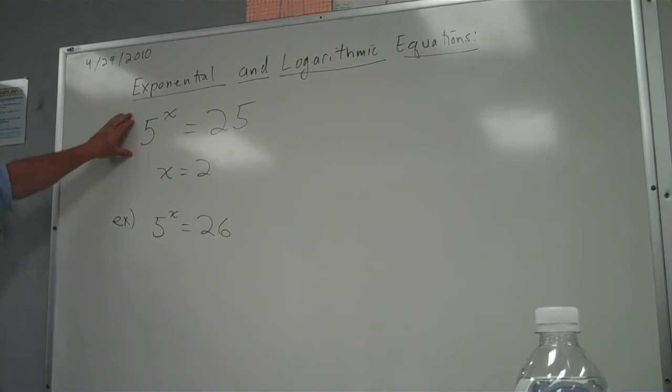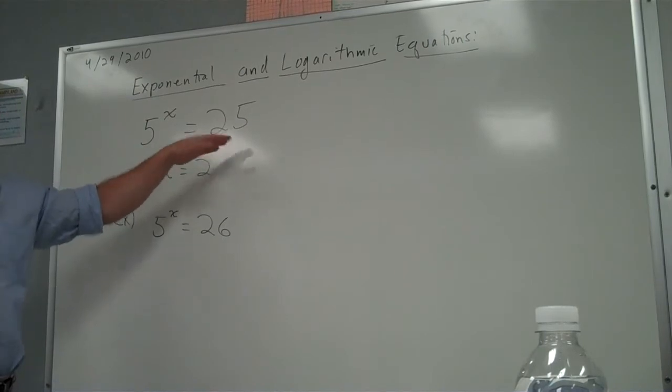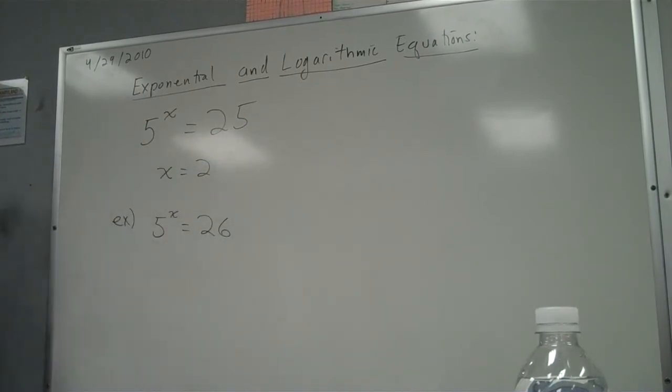But you can square root it. Now, square rooting it doesn't help because you don't know. You only know to square root it because you know that 5 is a square root of 25. That's still in the realm of observation, not algorithm.